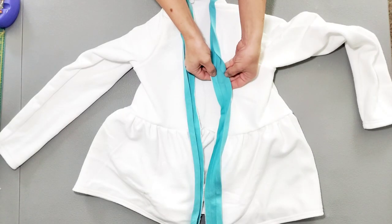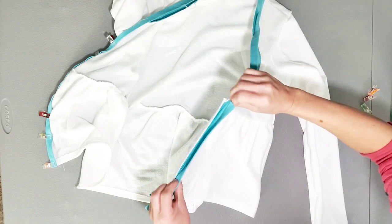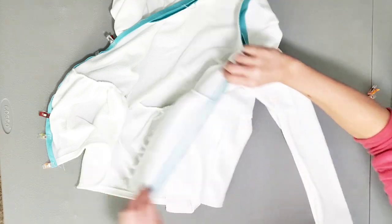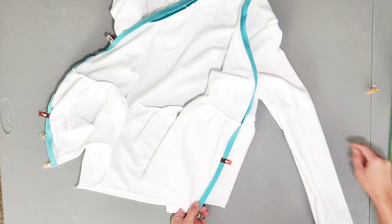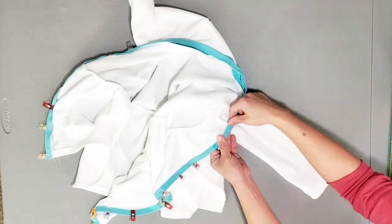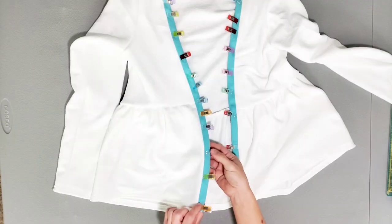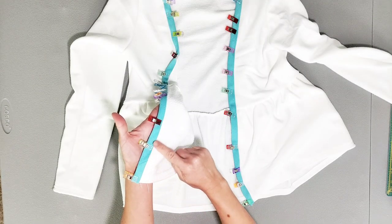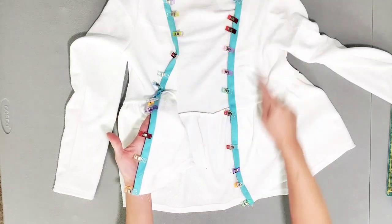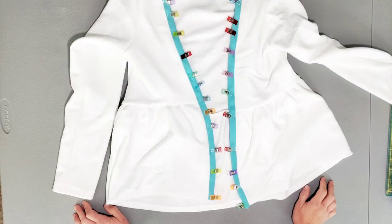I've sewn the bias tape to the front of my garment. Now I'm going to fold my bias tape in half to the inside, sandwiching that seam and clipping all the way around. Now I'm ready to take it to my machine and edge stitch close to this inner fold all the way around the entire garment. And then we're done with our cardigan.